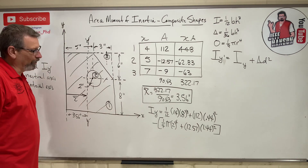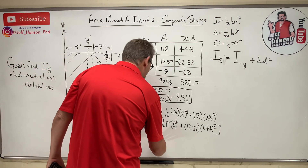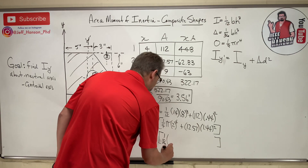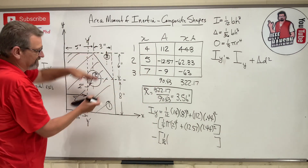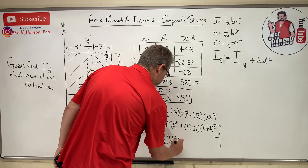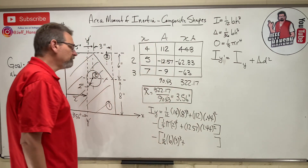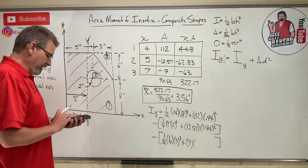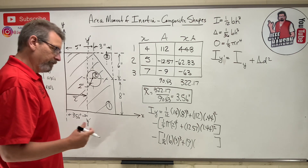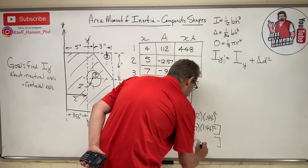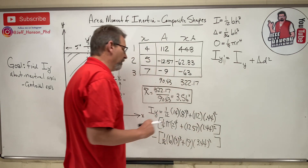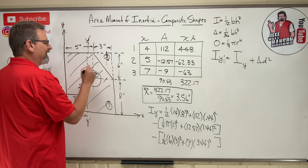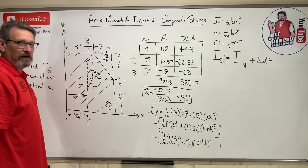Now subtract the triangle. The triangle formula is (1/36)·b·h³ — remember the base and height rotate, so base is now 6 and height is 3 — plus area 9 times d². The triangle centroid was at 7, so d = 7 − 3.56 = 3.44 inches, squared. Most people mess up the distance d — it's just how far that centroid is from the new axis.